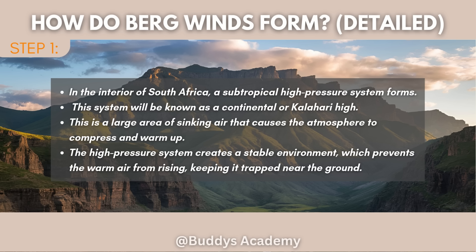Let's go into further detail about how Bergwinds form. The first reason for formation is due to the high pressure systems over the interior. In the interior of South Africa, a subtropical high pressure system forms, known as the Continental or Kalahari High. This is a large area of sinking air that causes the atmosphere to compress and warm up. The high pressure system creates a stable environment which prevents the warm air from rising, keeping it trapped near the ground.